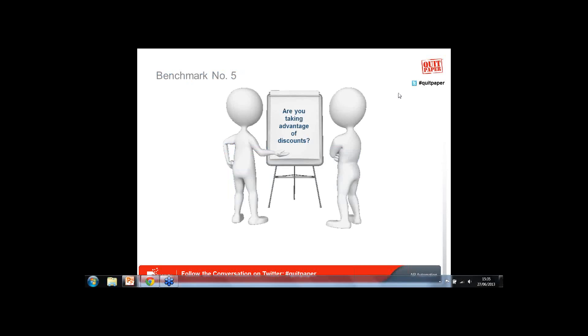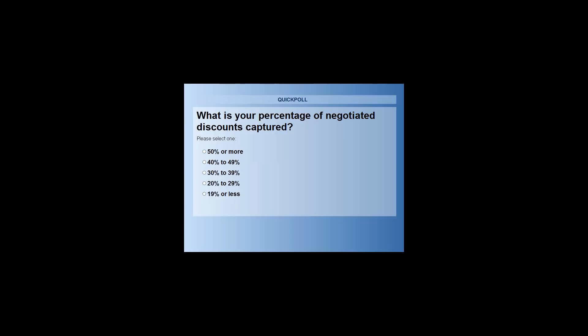The next question is closely related to paying to terms — are you taking advantage of discounts offered by your vendors? Benchmark number five: what is your percentage of negotiated discounts captured? Is it 50% or more, 40% to 49%, 30% to 39%, 20% to 29%, or 19% or less? This might not have featured much as a key AP benchmark four or five years ago, but it is now essential. It can govern how much you focus on other KPIs like payment on time.